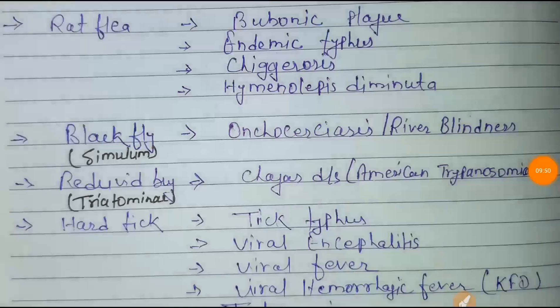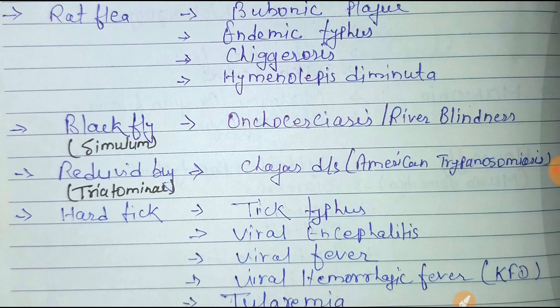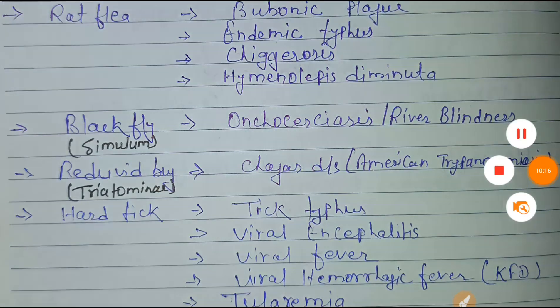The black fly, also called Simulium, causes river blindness and onchocerciasis. Next is the reduviid bug, also known as Triatoma, which causes Chagas disease or American trypanosomiasis. This is the image of the reduviid bug.